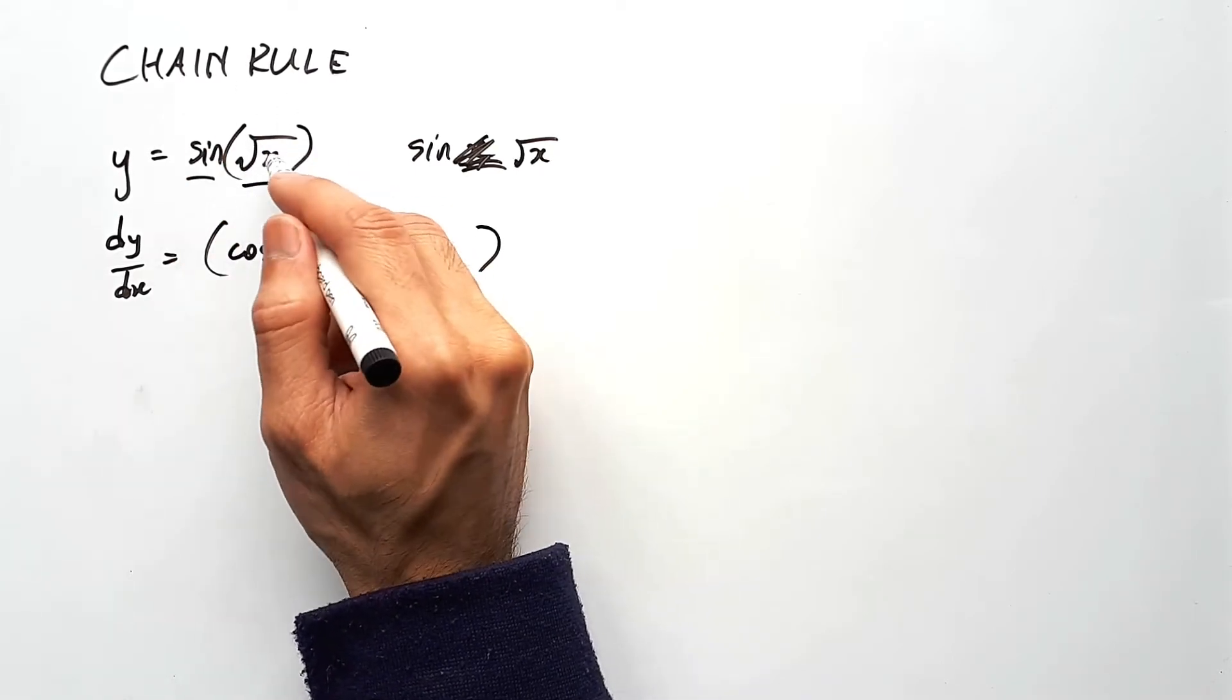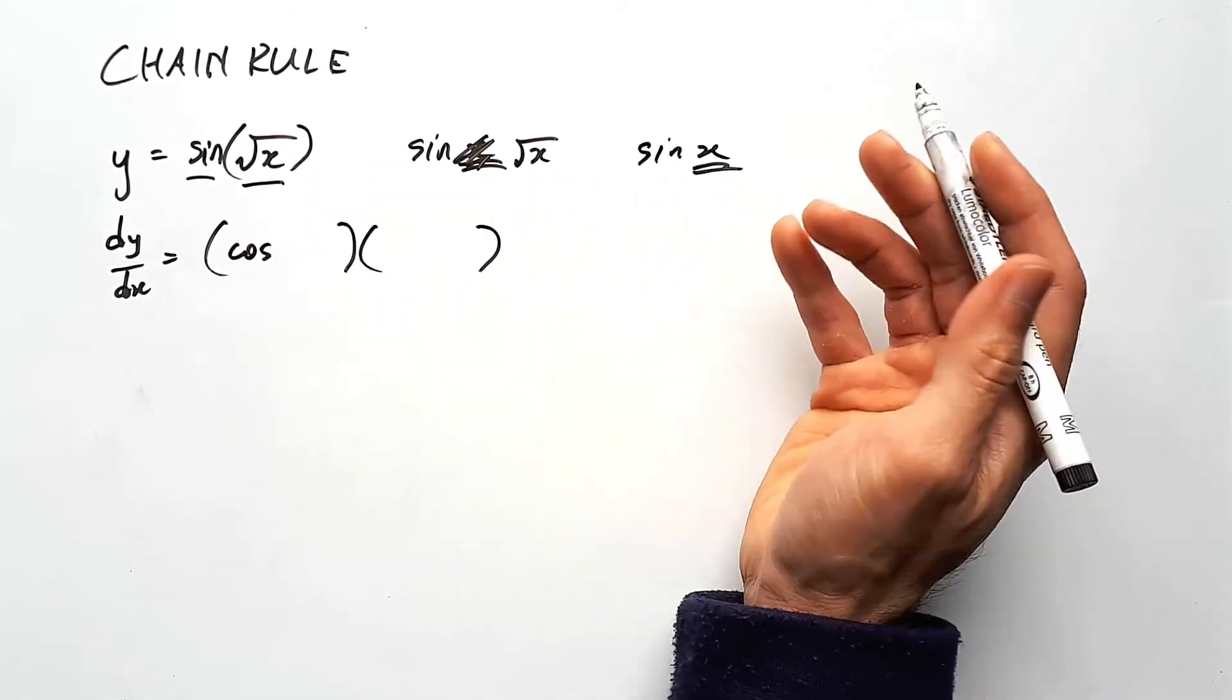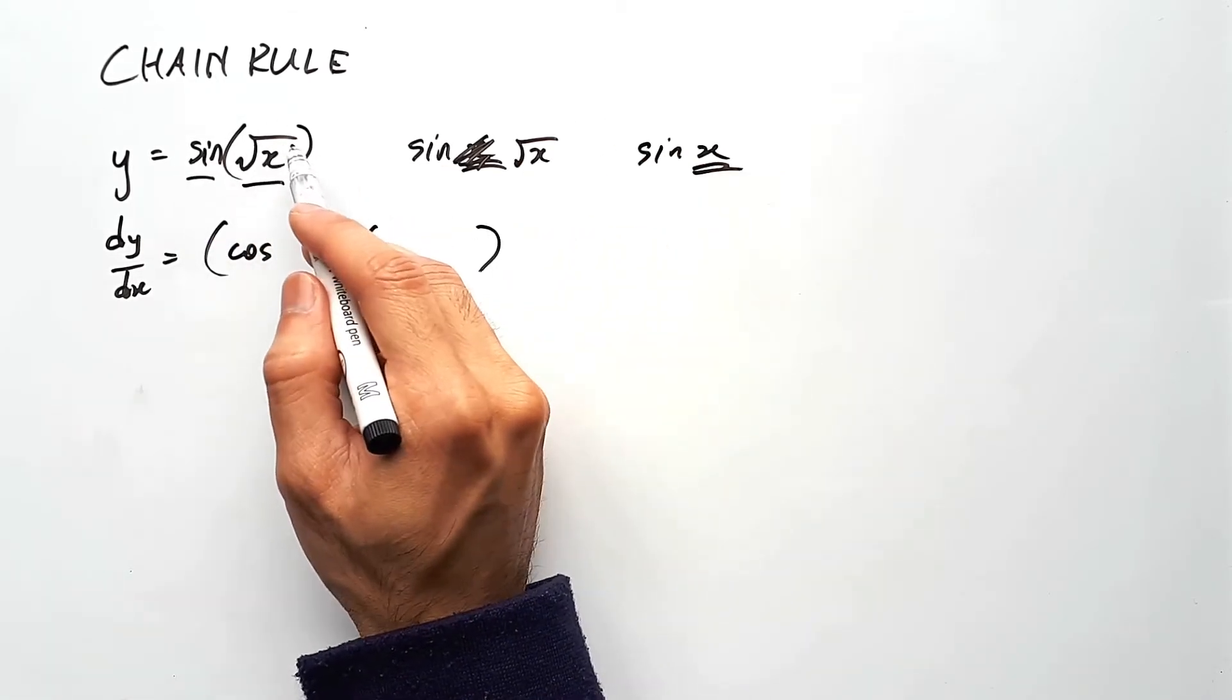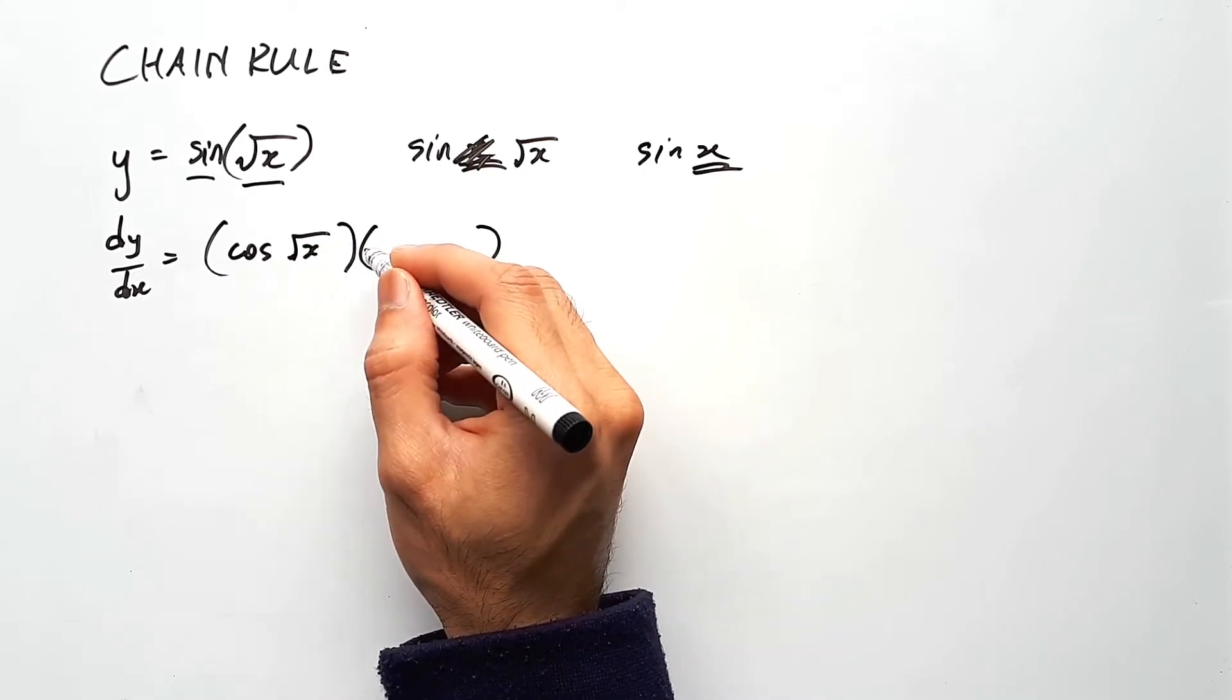But it's sine of something, right? And even in the case of where you have sine of x, the x simply represents anything. So sine of whatever is in here now becomes cos of whatever. Cos of square root of x.